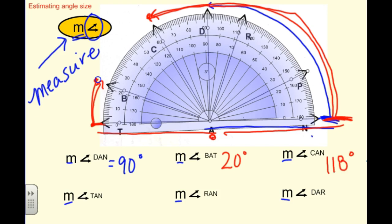So, pause and then you try the last three. Find the angles. Angle T, A, N, R, A, N, D, A, R. And then tell me how big those are. Measure them with the protractor.